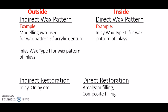Moving on to indirect and direct restorations: indirect restorations are fabricated outside the oral cavity and then cemented back onto the tooth structure. Examples include inlays and onlays, which are created outside the oral cavity and then cemented back. Examples of direct restorations include filling materials — the fillings that dentists perform, such as amalgam filling or composite filling.